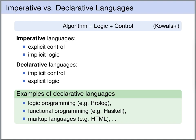Kowalski described algorithms as a combination of logic and control. In imperative languages, we have explicit control but only implicit logic — we explicitly describe how things are computed, but what is computed is left implicit. In declarative languages, this is reversed: we have explicit logic describing what we want, but the control flow of how it is computed is left implicit. Examples of declarative languages are logic programming like Prolog, functional programming such as Haskell, or markup languages such as HTML.